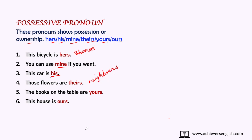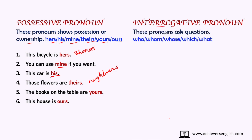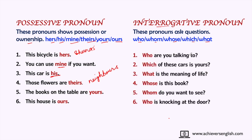Interrogative pronouns ask a question. The words used are: who, whom, whose, which, and what. Examples: 'Who are you talking to? Which of these cars is yours? What is the meaning of life? Whose is this book? Whom do you want to see? Who is knocking at the door?' In 'Who is knocking at the door?' — the peon is knocking, so 'peon' is a noun replaced by 'who.' This is how interrogative pronouns are formed.